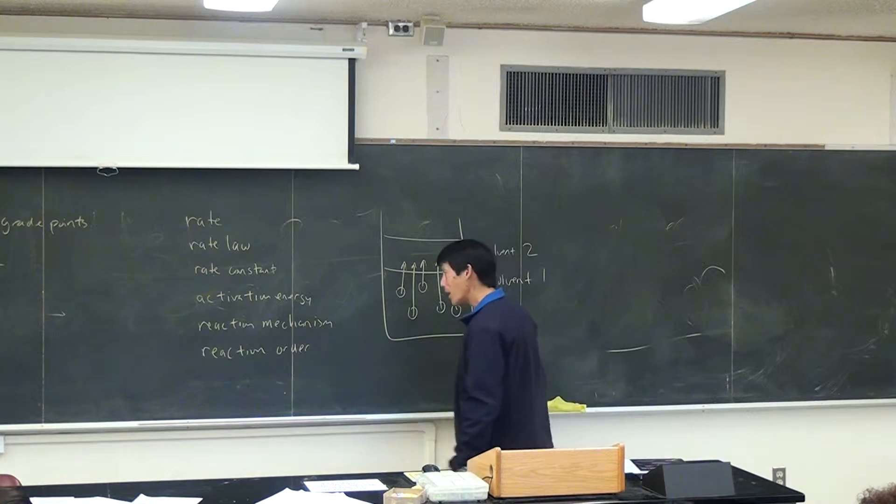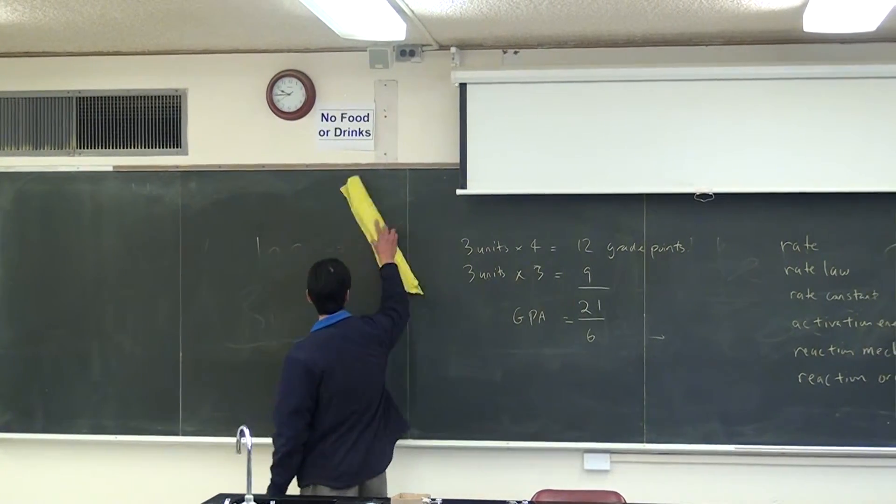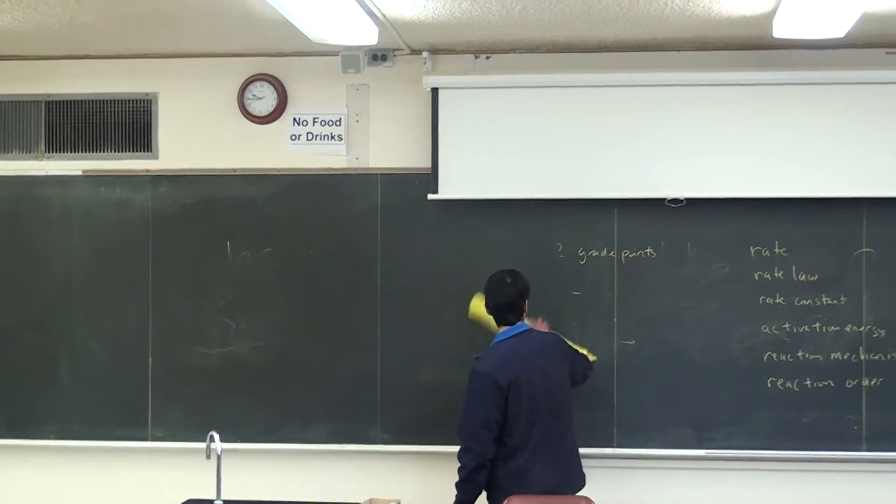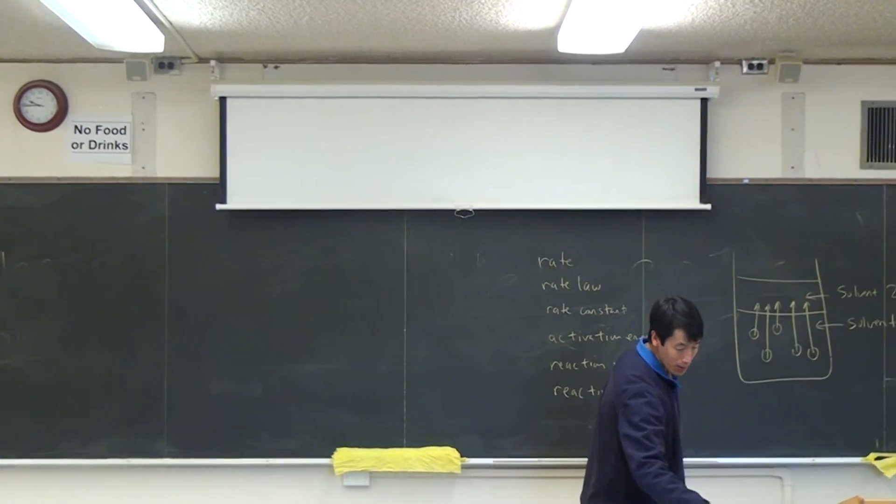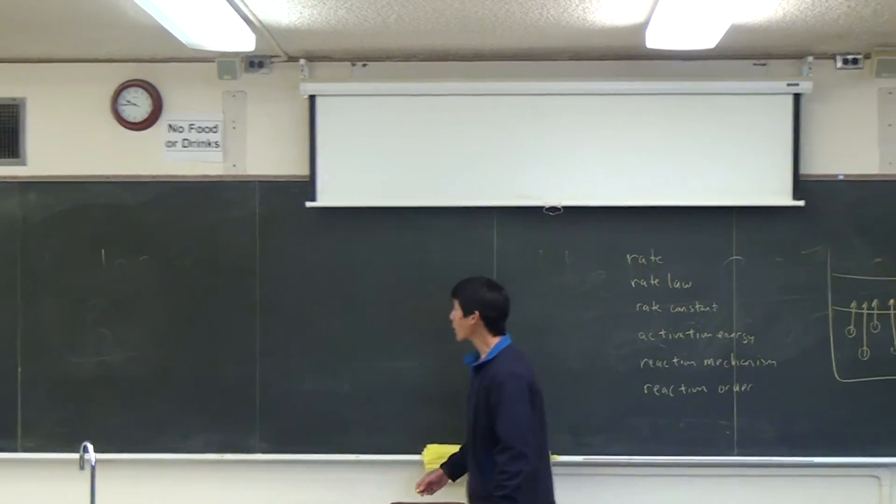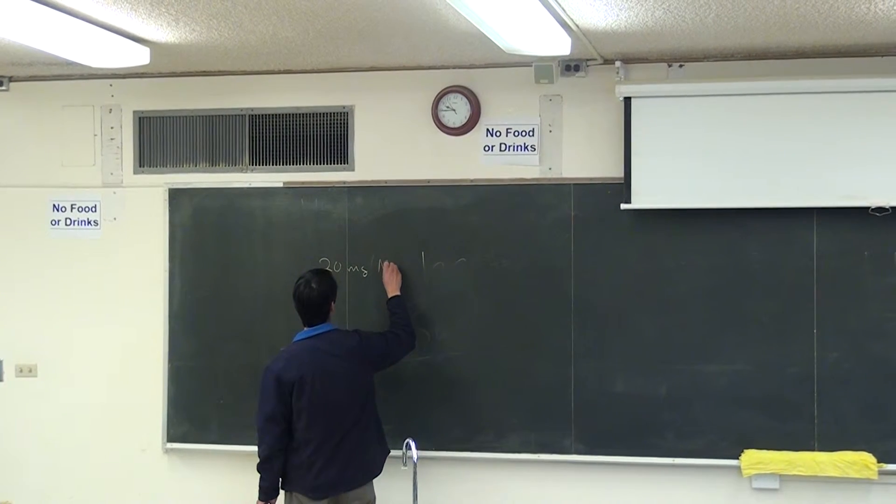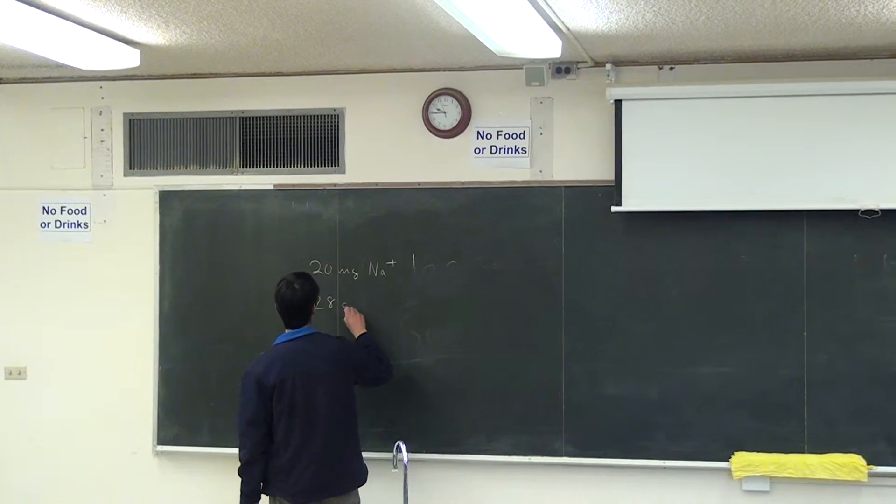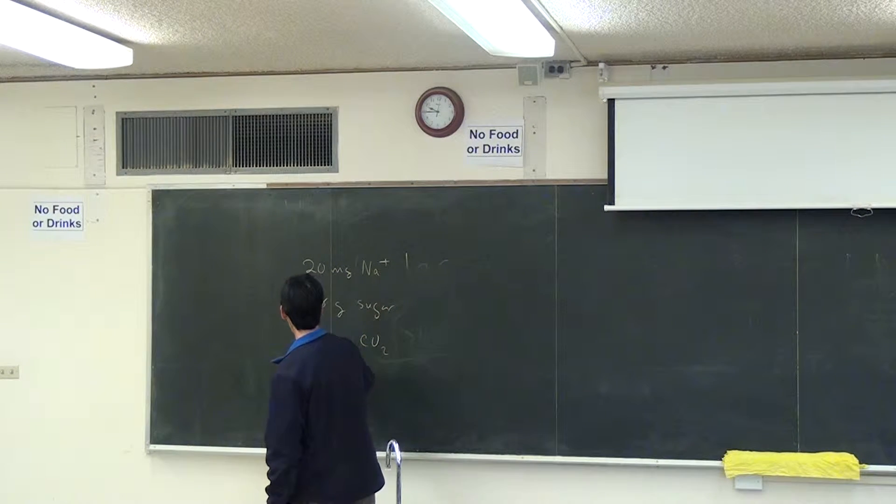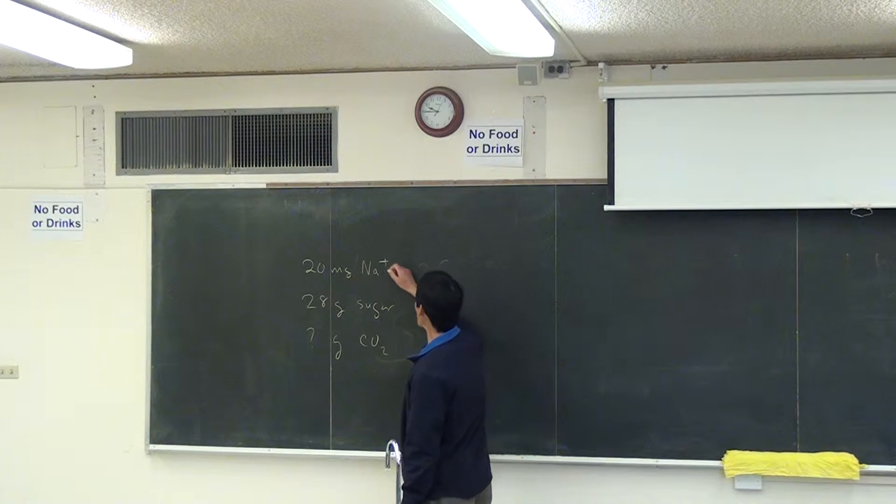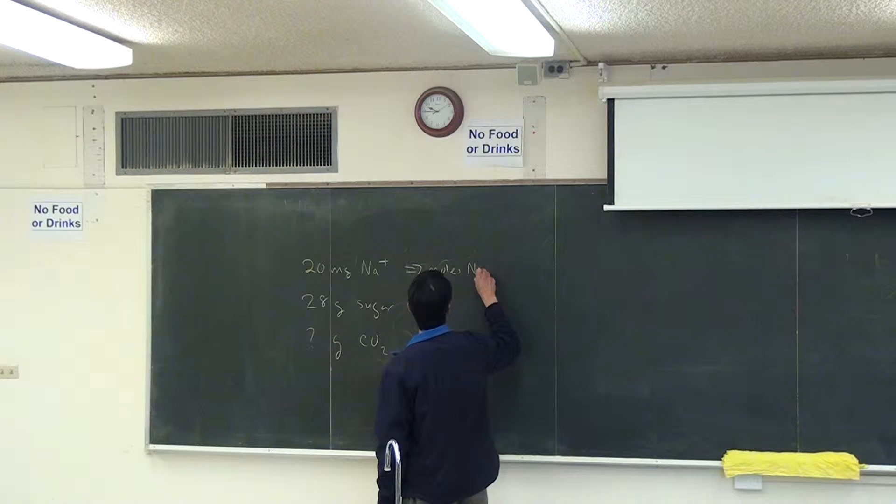So in that calculation, you're given 20 milligrams of sodium, 28 grams of sugar, and then there's some CO2. The mass wasn't given. Okay, so what you can do is convert from milligrams of sodium to moles of sodium.